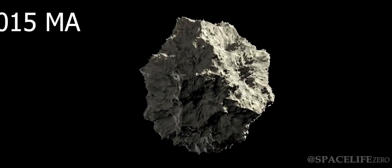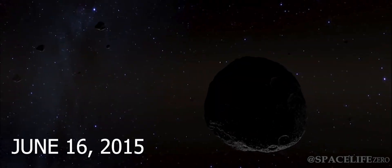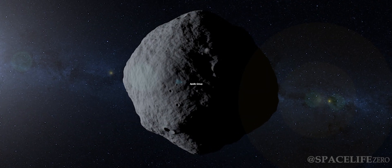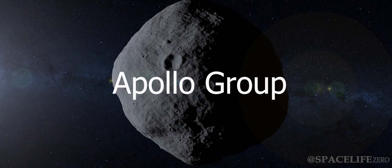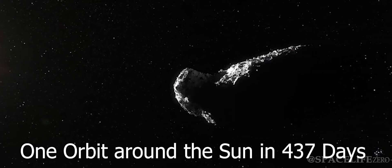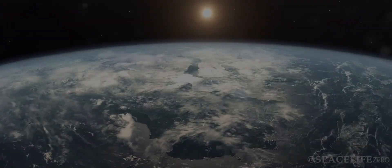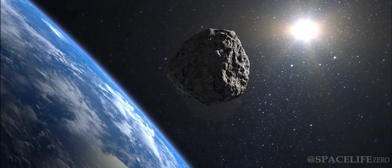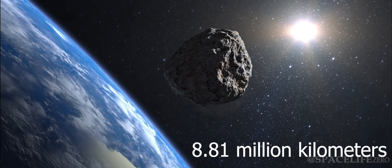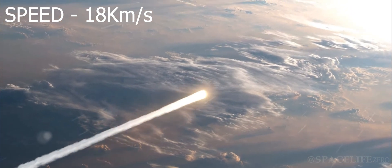Asteroid 2015 MA was discovered on June 16, 2015, and it also belongs to the Apollo Group. It takes about 437 days to complete one orbit around the Sun. On December 22, at 2043 GMT, it will fly past Earth at a close distance of 8.81 million kilometers, at an incredible speed of 18 kilometers per second.